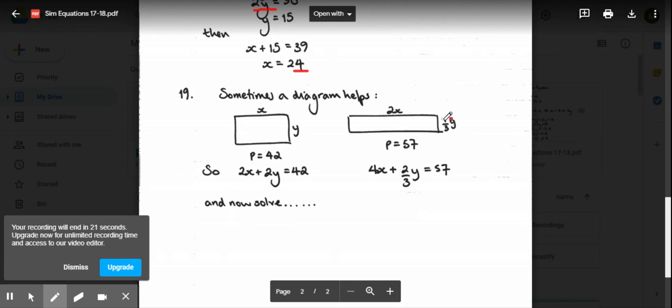The perimeter equation for this one is 2 lots of x because you've got two sides and 2 lots of y, it's 42. This one, 2 lots of 2x and 2 lots of a third y. Now you need to try and solve it.